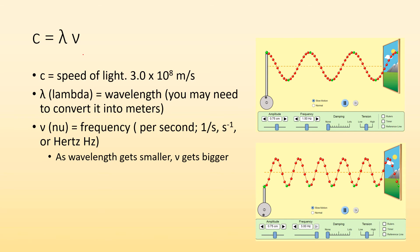And then nu, this kind of weird looking V, is the frequency. And per second, or one over second, or second to the minus one, or hertz, or Hz, those are all the same thing. So as the wavelength gets smaller, the frequency gets bigger.